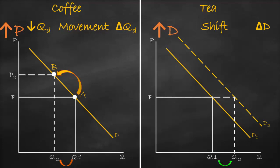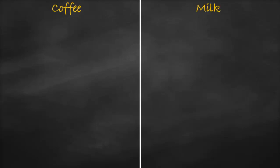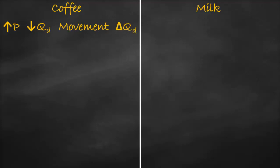Vice versa: if the price of one product goes down and the demand of another product goes down, these two goods are also substitutes. Now let's look at complements. Assume you want to drink cappuccino — every time you drink coffee you also drink milk. If the price of coffee goes up, people consume less coffee, so the quantity demanded drops. Because we changed the price of coffee, this is a movement — a change in quantity demanded.